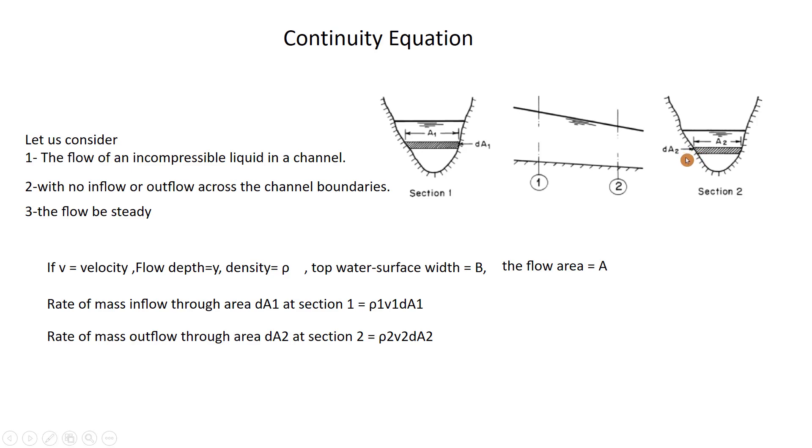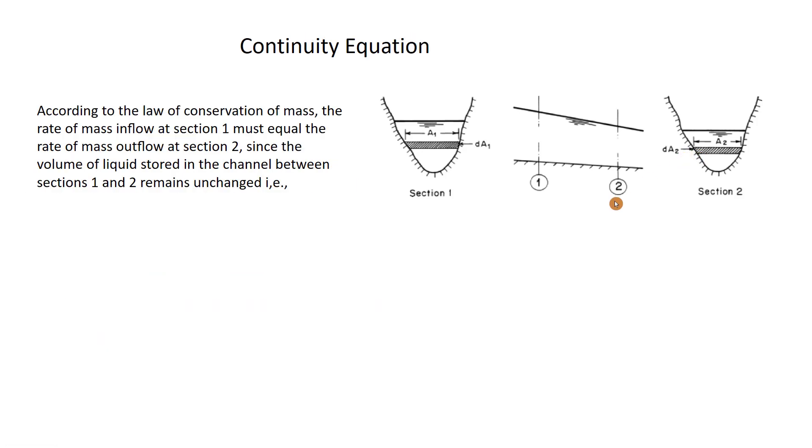According to the law of conservation of mass, the rate of mass inflow at section 1 must equal the rate of mass outflow at section 2, since the volume of liquid stored in the channel between sections 1 and 2 remains unchanged. The flow is incompressible and there is no inflow or outflow across the boundary of the channel.